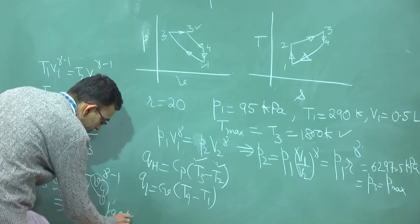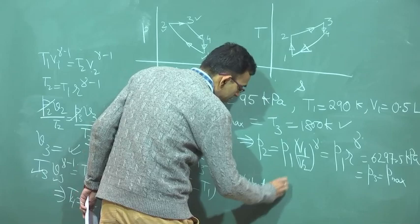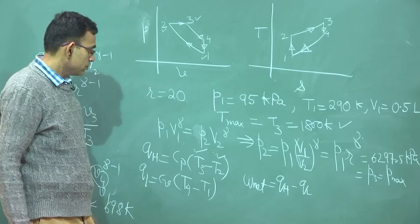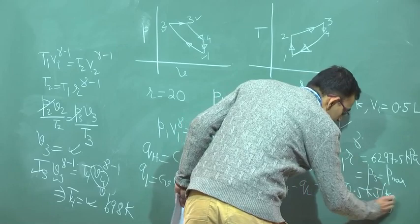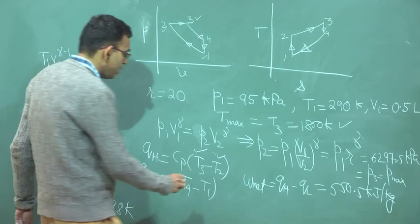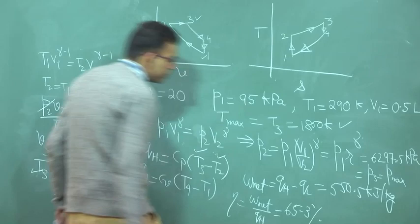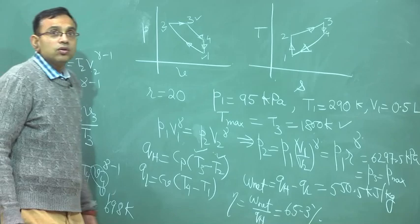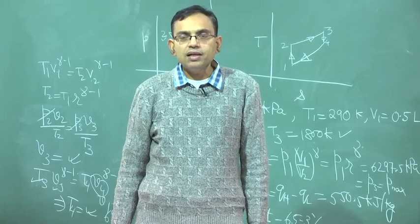T₄ = 698 Kelvin. The net work W_net = Q_H − Q_L = 550.5 kJ/kg, and the thermal efficiency = W_net / Q_H = 65.3%. We have now worked out problems for both the Otto cycle and the Diesel cycle. In the next lecture we will continue with another air standard cycle called the Brayton cycle or Joule cycle. Thank you very much.